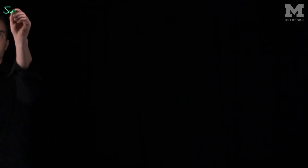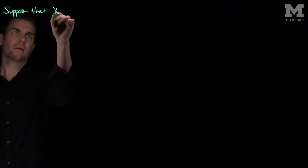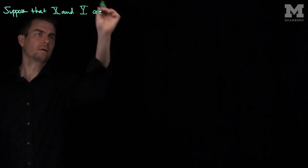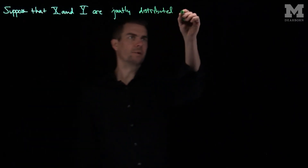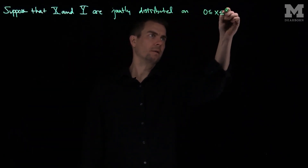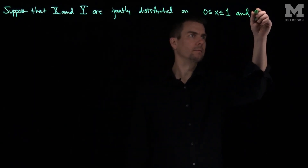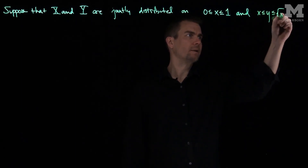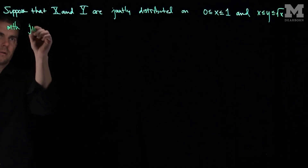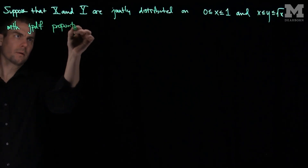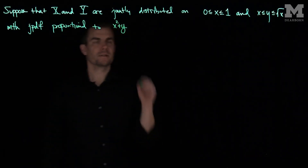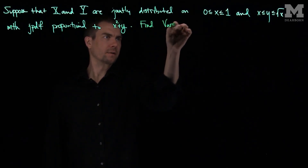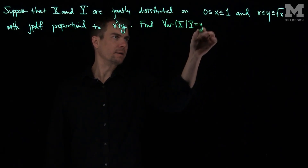Hello students. In this video we'll see an example of computing conditional variance. Let's suppose that x and y are jointly distributed on the region where x goes between 0 and 1, and y goes between x and square root of x, with joint pdf proportional to x squared plus y. Let's find the variance of x given that y is equal to little y.